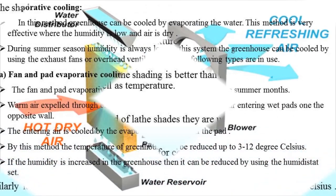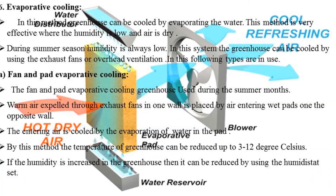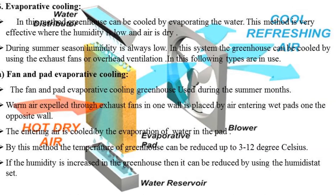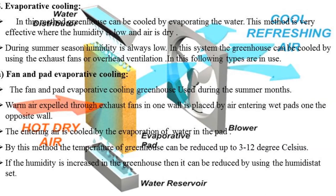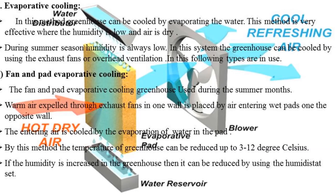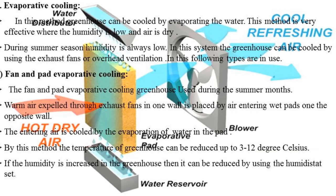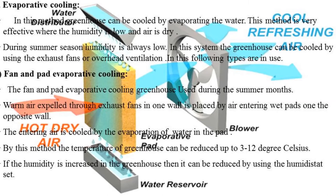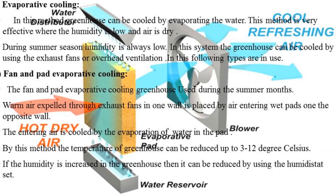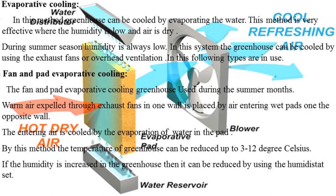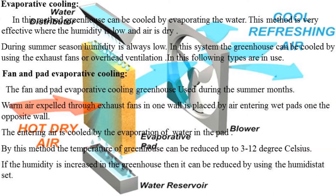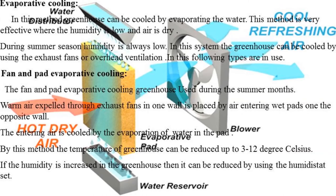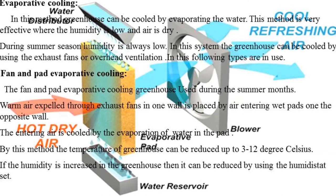Next we discuss evaporative cooling. In this method, the greenhouse can be cooled by evaporating water. This method is very effective where humidity is low and air is dry — generally in summer season, humidity is low and temperature is high. The greenhouse can be cooled using exhaust fans or overhead ventilations. There are different evaporative cooling methods: first is fan and pad evaporative cooling, second is high pressure mist, and third is low pressure mist.